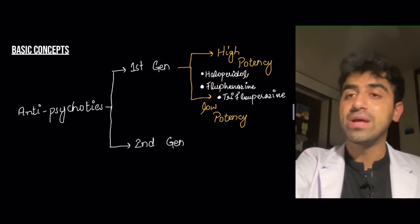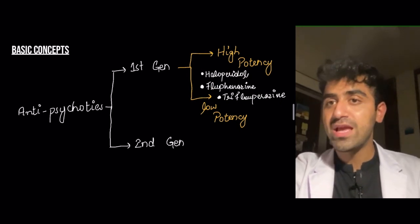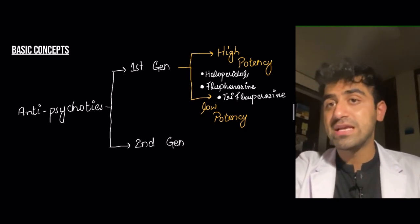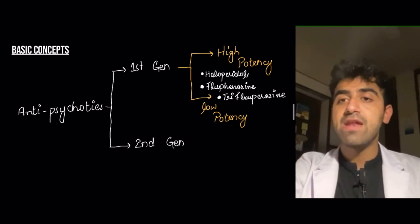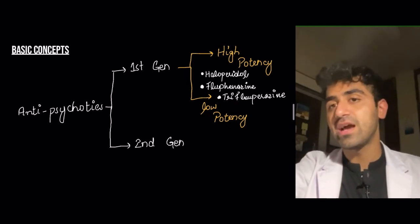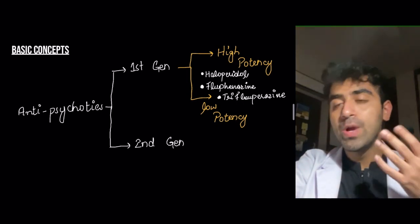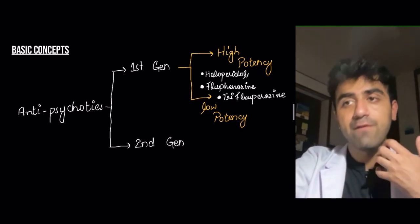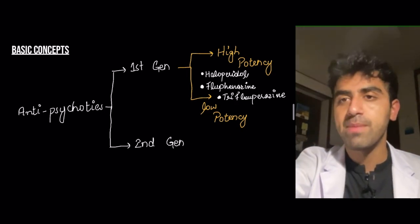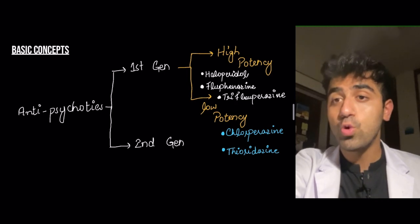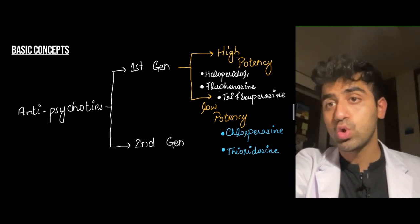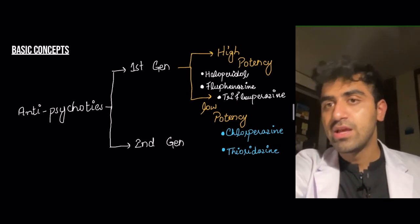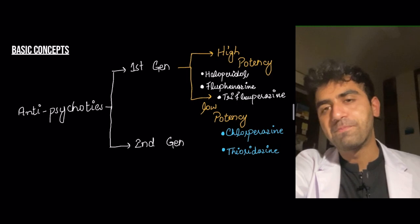Examples of high potency include haloperidol, fluphenazine, and trifluoperazine. How I remember these: haloperidol is high potency — both start with H. For fluphenazine and trifluoperazine, I remember that when you get the flu it highly affects your life for a day or two — that's how you remember high potency drugs. Then we have low potency drugs such as chlorpromazine and thioridazine.